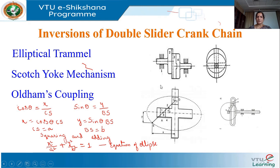Now I will discuss inversions of the double slider crank mechanism. In a double slider crank mechanism, there are two turning pairs and two sliding pairs, and it is also a four-bar mechanism. Some of the inversions of double slider crank mechanisms are the elliptical trammel, the scotch yoke mechanism, and the Oldham's coupling.